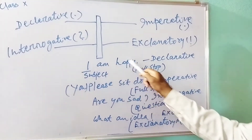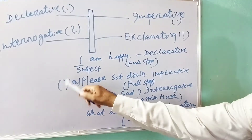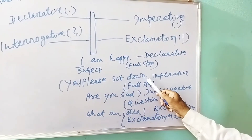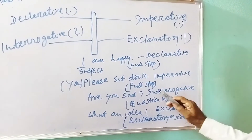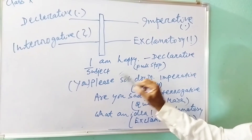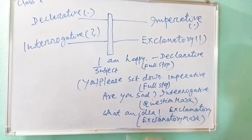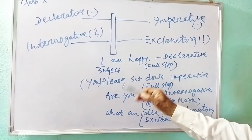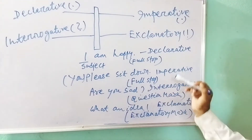Imperative: 'Please sit down' — the subject 'you' is hidden and it ends with a full stop. An imperative sentence also begins with a main verb: 'Go there,' 'Open the door.' It can begin with 'kindly' — 'Kindly go there' — or 'please' — 'Please go there.' Even 'Do not go there,' 'Do not play ball' — these are imperative sentences.